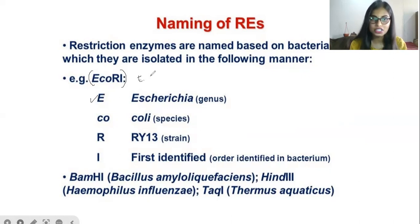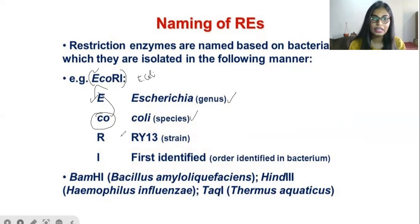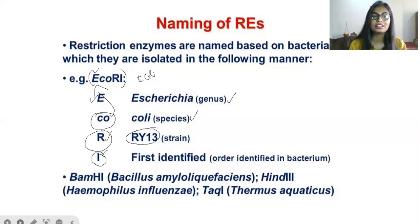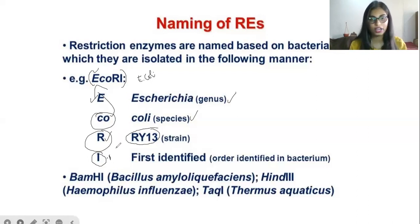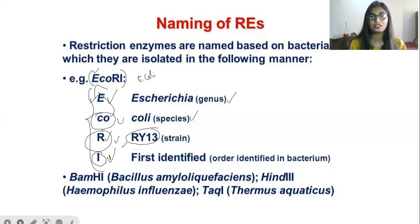Then 'CO' — from coli, they took 'co', that is the species. Then 'R' is the strain — R13 strain — from which they took 'R'. Next, the number 'I' — this is not the letter I, that is EcoR1. This number represents the order identified in the bacteria. EcoR1 is the first identified, that's why it is named as one. So the naming is: first letter is genus, then species, then strain, and lastly the order of identification.